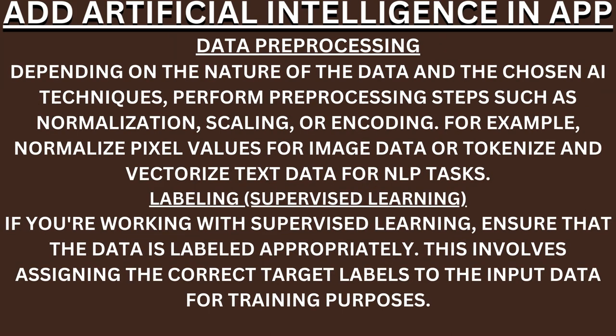Data pre-processing. Depending on the nature of the data and the chosen AI techniques, perform pre-processing steps such as normalization, scaling, or encoding. For example, normalize pixel values for image data or tokenize and vectorize text data for NLP tasks. Labeling for supervised learning. If you are working with supervised learning, ensure that the data is labeled appropriately — assigning the correct target labels to the input data for training purposes.